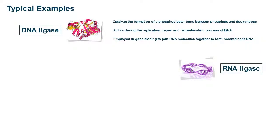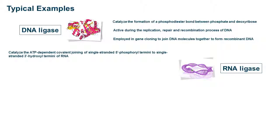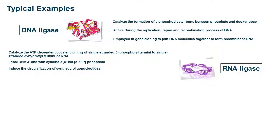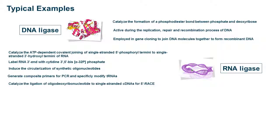RNA Ligase catalyzes the ATP-dependent covalent joining of single-stranded 5'-phospho-termini to single-stranded 3'-hydroxyl-termini of RNA. It can label RNA-3' ends with cytidine 3',5'-bis(alpha-32P)phosphate, induce the circularization of synthetic oligonucleotides, generate composite primers for PCR, and specifically modify tRNAs.